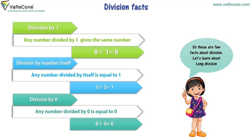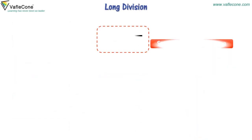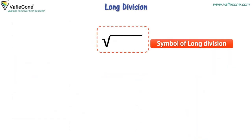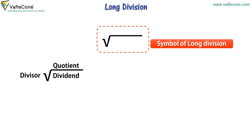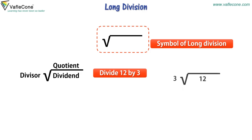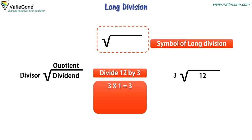Let's learn about long division. This is the symbol of long division. We need to place the divisor, dividend, and quotient here. Now divide twelve by three. So placing twelve and three. Now say the table of three until you get twelve: three times one equals three, three times two equals six, three times three equals nine, three times four equals twelve. So here the quotient is four.